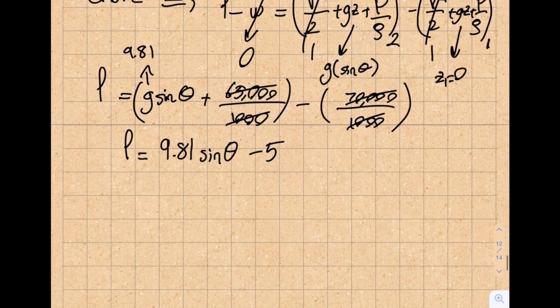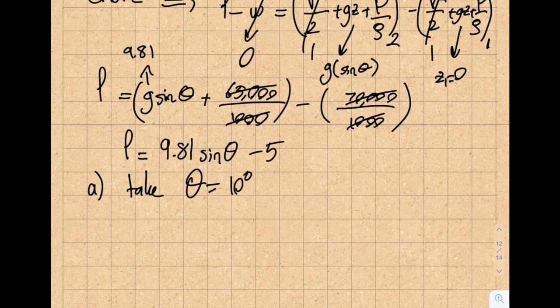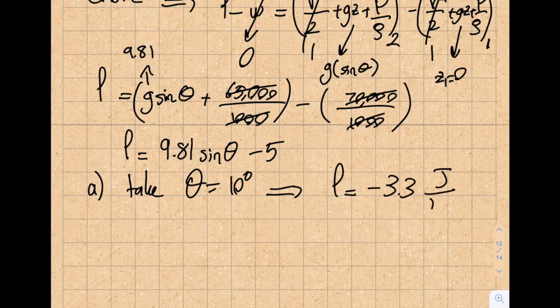So then what we're going to do is in part A, take theta as 10 degrees. And from here, my loss will be minus 3.3 joule per kilogram if I plug the numbers in.